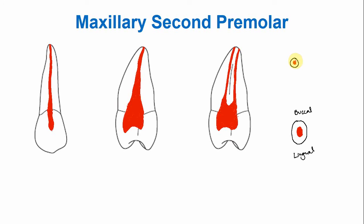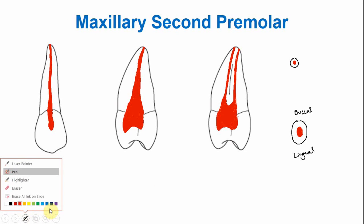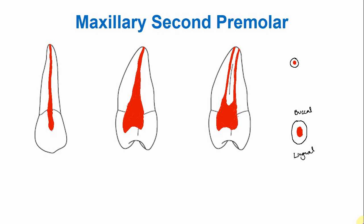With advancing age, there is more deposition of secondary and tertiary dentine, so the size of the pulp chamber is reduced, and the canal as well. The pulp horn becomes more blunt, and the size of the chamber also reduces because of deposition of secondary dentine — which is a physiological dentine — and tertiary dentine, which deposits in response to dental caries or attrition. Similarly, in the buccolingual section, there is reduction in the buccolingual width of the pulp chamber and the canal.